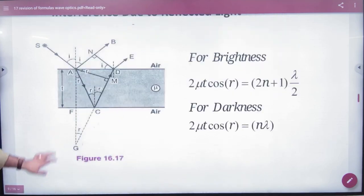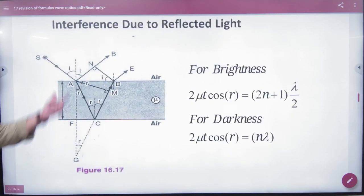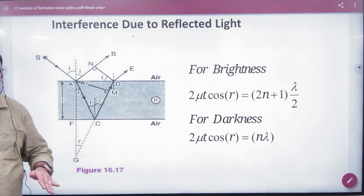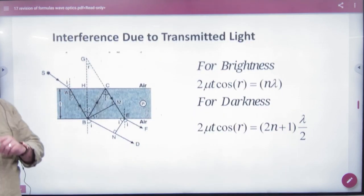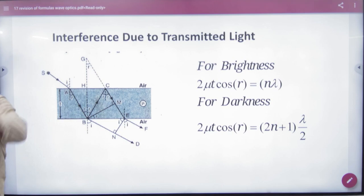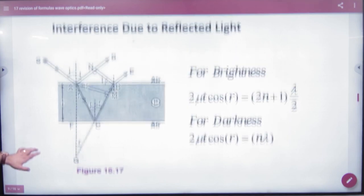So if the interference is in the film on the top surface, it is called reflected light. Interference due to reflected light. And if it is on the surface of the interference due to transmitted light, it is written in the question, transmission or reflection. So in reflection, darkness and brightness is this condition.